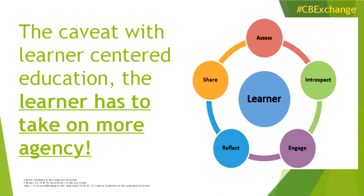Most learners when they get into a classroom are not comfortable with that — they don't think they can do it because they've been in the industrial model. But they actually do know it. Think of Facebook: I have never seen a class called Facebook 101, and yet we have millions of users. How did they learn? They had agency. They chose to engage with it, to make mistakes, to fail, to reflect on their failures, to go talk to others, and to assess how good they were at it. You can encourage your learners that they do know how to have agency and don't need to be passive recipients.